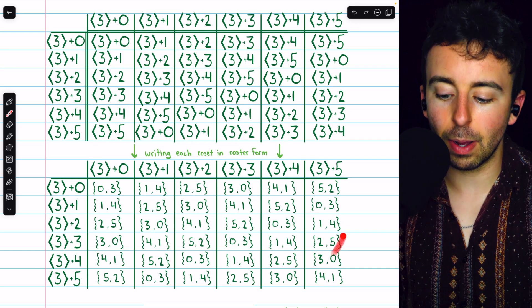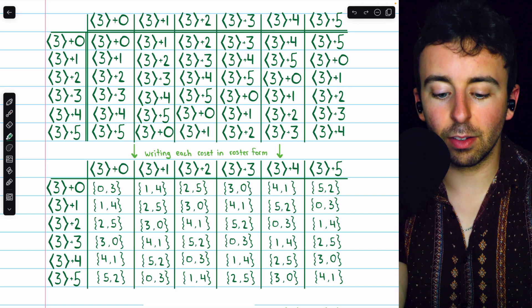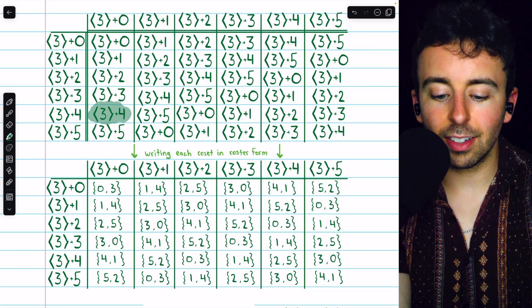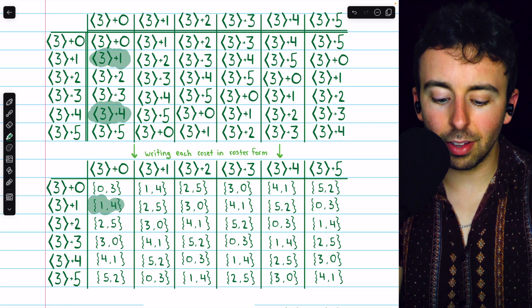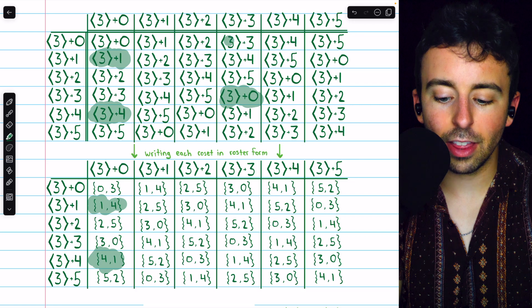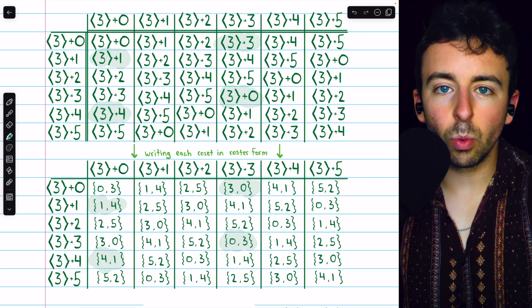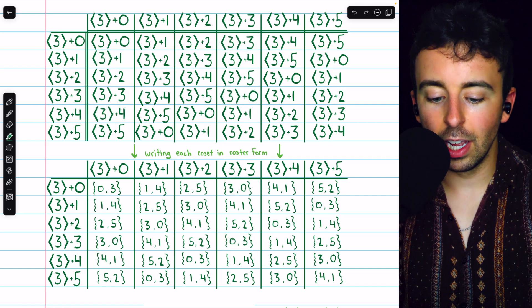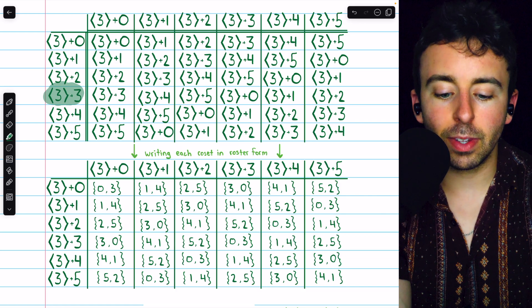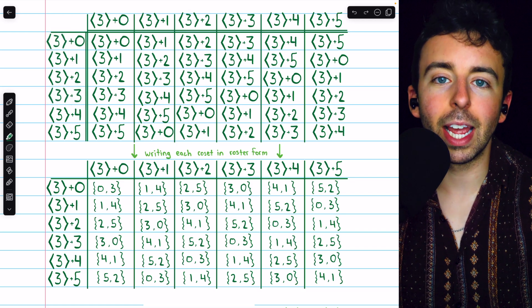So each coset has just been replaced by what it actually is in roster notation. And now we see all sorts of redundancies because, for example, the cyclic subgroup generated by 3 plus 4 and the cyclic subgroup generated by 3 plus 1, those are the same. They're both just sets containing 1 and 4. Also, the plus 0 coset and the plus 3 coset are the same. They're both just the sets containing 3 and 0. So we're going to eliminate all of the redundant information. We don't need the cyclic subgroup generated by 3 plus 3 because that's the same as the cyclic subgroup generated by 3 plus 0. And, of course, all the other similar redundancies we will eliminate as well.